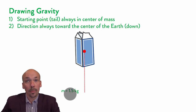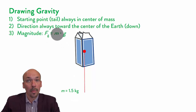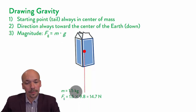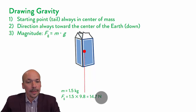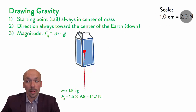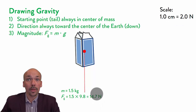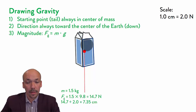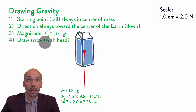We know that this box has a mass of 1.5 kilograms, so we can determine what the gravitational force is using this equation: the gravitational force equals mass times the gravitational constant, which is 9.8. So we do 1.5 kilograms times 9.8, and we get 14.7 newtons — don't forget the unit. Now we can draw it, but we need a scale to convert newtons to centimeters. In this case, the scale is 1 centimeter equals 2.0 newtons. So we divide 14.7 by 2, and the arrow needs to be 7.35 centimeters downwards. We draw the arrow with a head.